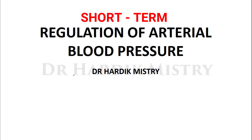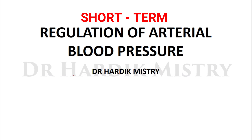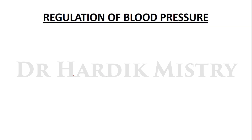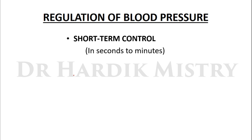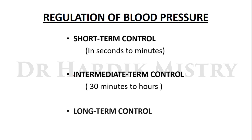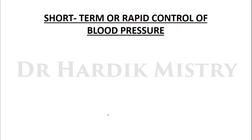Today we begin with the regulation of arterial blood pressure. There are three mechanisms through which our body is going to regulate blood pressure: short term control in seconds to minutes, intermediate term control within 30 minutes to hours, and long term control. First we begin with the short term or rapid control of blood pressure.